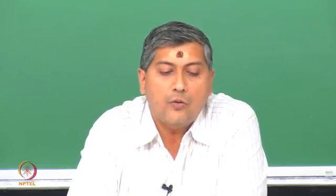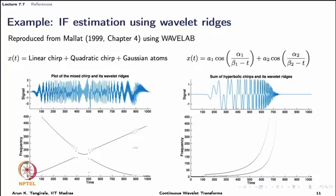Let me show a couple of examples borrowed from Stéphane Mallat's book and reproduced using WaveLab. The signal on the left is a mixture of a linear chirp plus a quadratic chirp and a couple of Gaussian atoms. At the top is the signal itself, and at the bottom are the ridges computed using WaveLab. The ridges nicely detect the linear and quadratic varying nature of the frequencies.